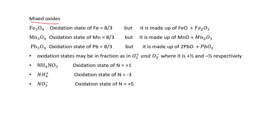For mixed oxides: Fe₃O₄ gives an average oxidation number of iron as 8/3. But Fe₃O₄ is made up of FeO and Fe₂O₃. In FeO, the oxidation number of iron is +2; in Fe₂O₃, it is +3 for each iron. The average of these values gives 8/3.